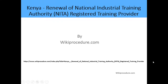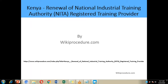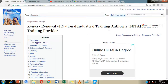Hello, welcome to another WikiProcedure. Today we are going to look at how we can make an application for renewal of National Industrial Training Authority registered training provider. Down here below, we have given you a link which is going to direct you to our WikiProcedure website page where we have given you detailed information on how you can go about the application process.